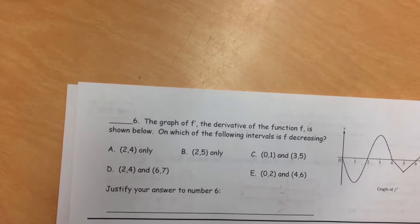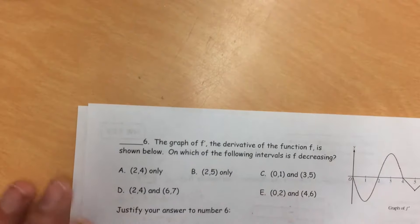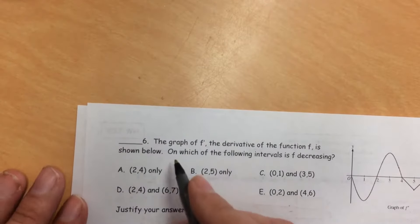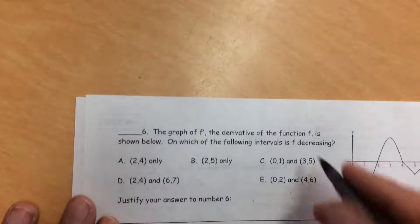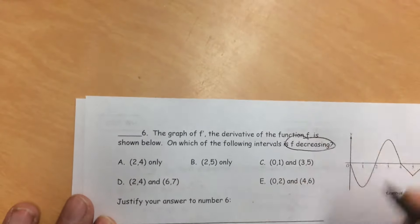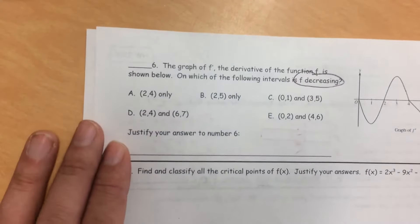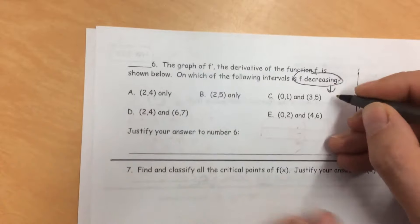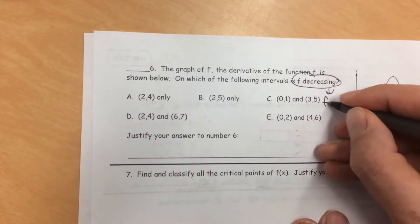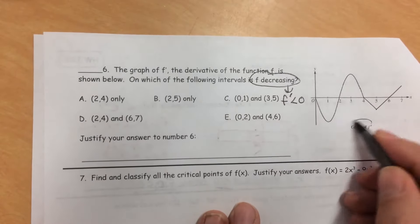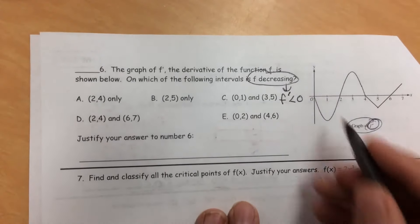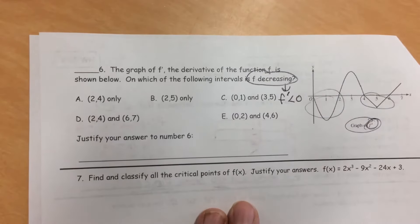We'll do one more on the back. I like these. Let's do number 6. We want to know where is f decreasing. f is decreasing. You want to be able to translate instantly into language, into calculus. f is decreasing means that f' is less than 0. So we're looking for where f' is less than 0 and they've already given us f'.